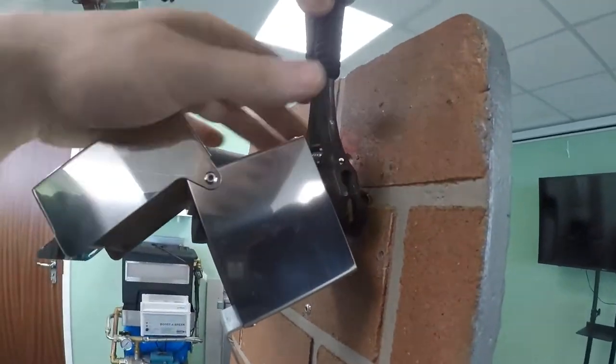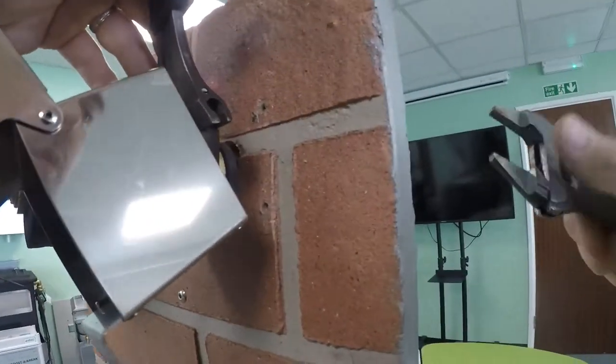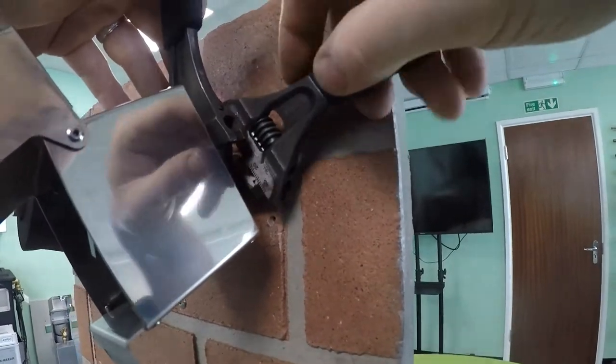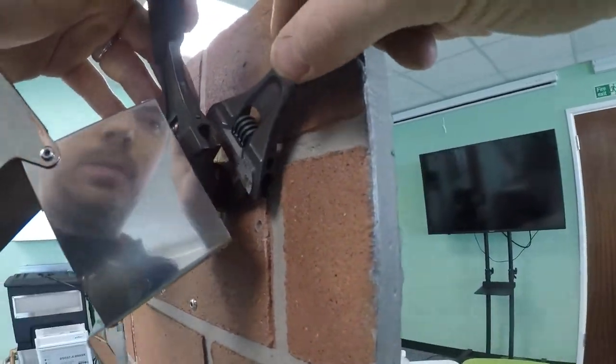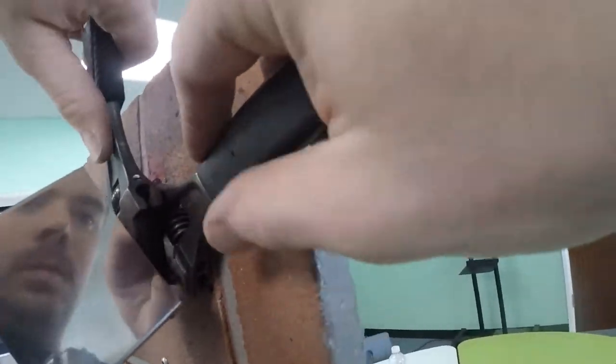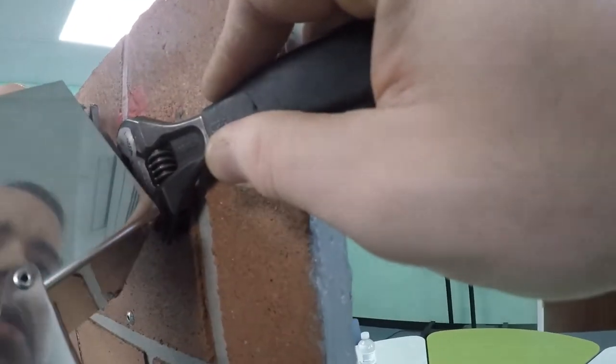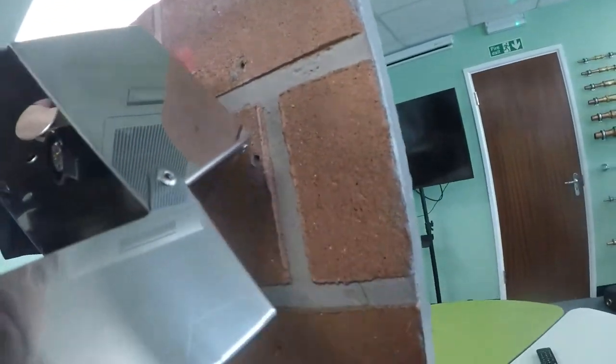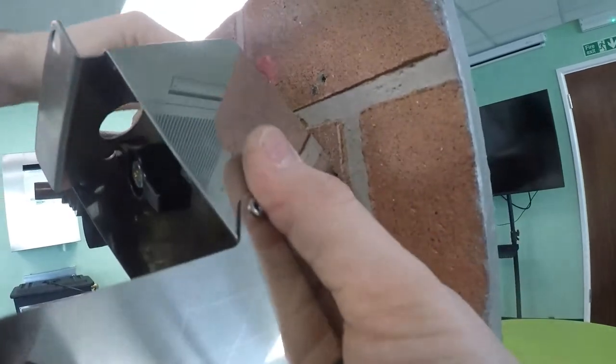One spanner on the back of the wall valve. Then we're going to pop the other one on this oyster fitting at the back here. There we go. That's freed that off.